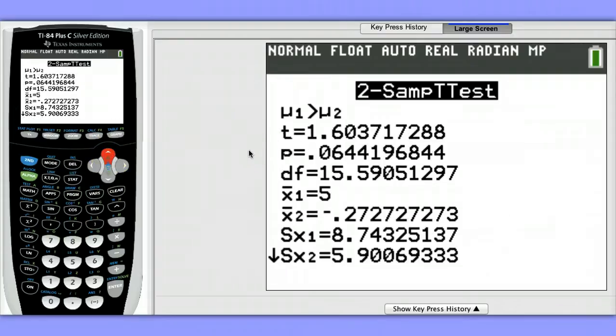With a p-value of 0.06, there's some evidence, but not strong evidence, against the null hypothesis. If our alpha level was 0.05, we would fail to reject the null hypothesis. If the alpha level was 0.10, we would reject the null hypothesis. So there's some evidence, but it's not very strong evidence, that calcium helps to reduce blood pressure.